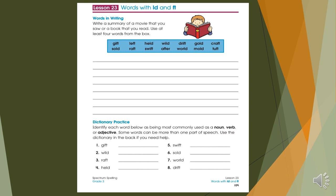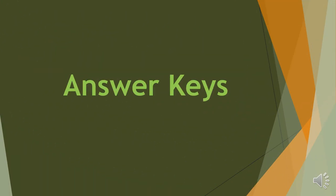The last exercise. Dictionary practice. Identify each word below as being most commonly used as a noun, verb, or adjective. Some words can be more than one part of speech. Use the dictionary in the back if you need help. So you are identifying each one of them. Which one is noun, which one is verb, which one is adjective. You should find them. And you can use the glossary, the dictionary that you have at the end of your book.